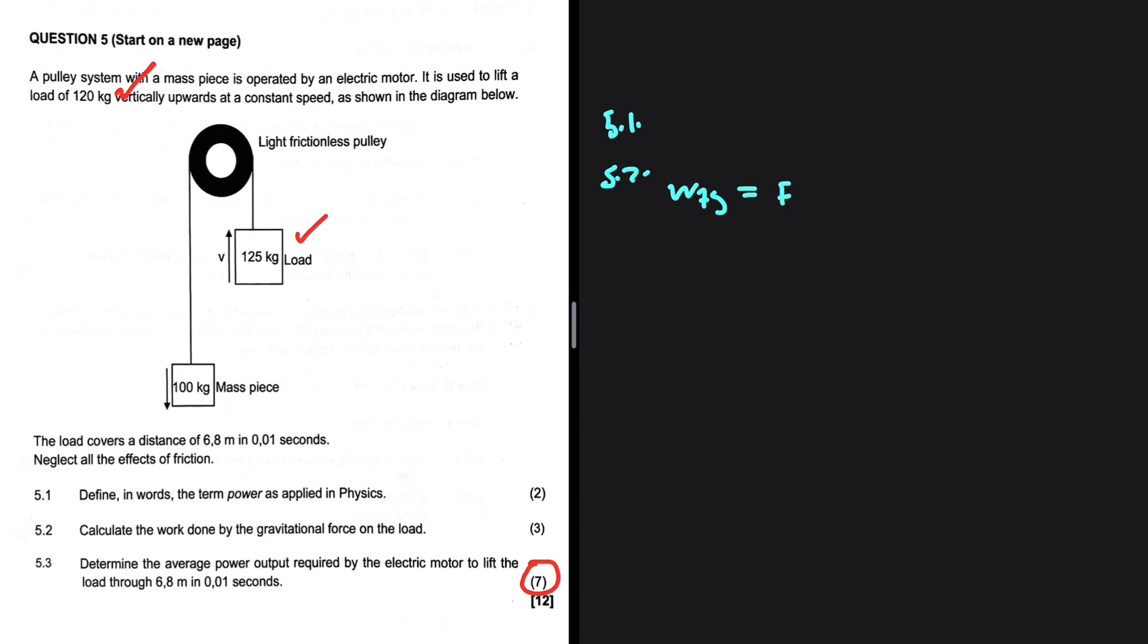The work done by gravitational force equals the force by gravity multiplied by delta y times cos of theta.